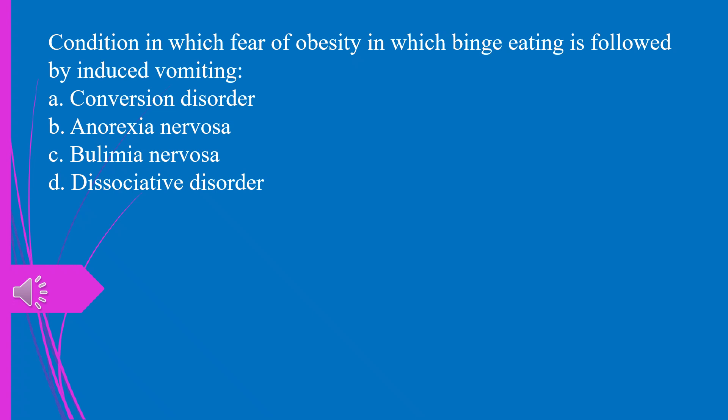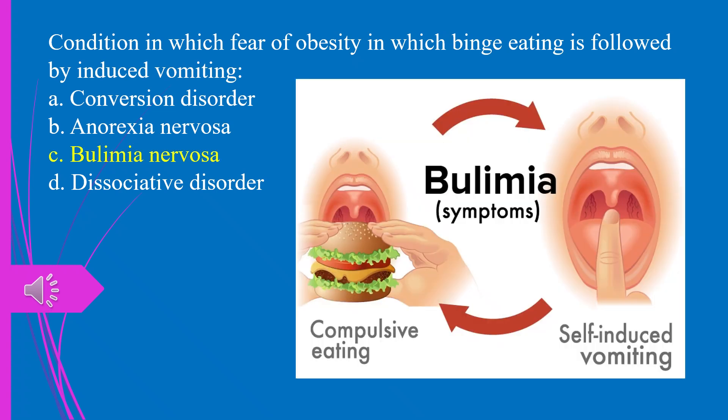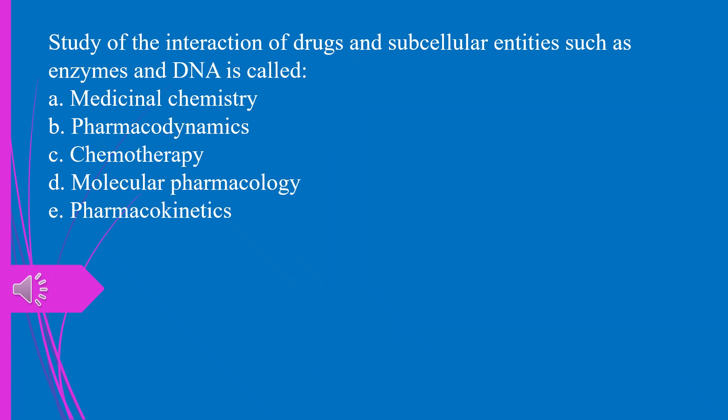Question 52. Condition in which fear of obesity causes binge eating followed by induced vomiting: a) conversion disorder, b) anorexia nervosa, c) bulimia nervosa, d) dissociative disorder. The answer is c, bulimia nervosa.